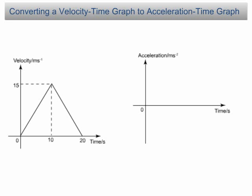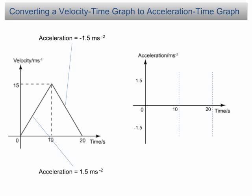Let's look at this example — it is exactly the same graph from the previous slide. We found that for the first 10 seconds the acceleration is 1.5 meters per second squared, and from 10 seconds to 20 seconds the acceleration is negative 1.5 meters per second squared. After labeling the scales on the horizontal and vertical axes, this gives us the acceleration-time graph corresponding to the velocity-time graph.